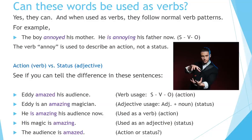Can these words be used as verbs? Yes, they can. When used as verbs, they follow normal verb patterns. For example: the boy annoyed his mother; he is annoying his father now. This follows the subject-verb-object pattern. The verb 'annoy' is used to describe an action, not a status. Action is described using a verb; status is described using an adjective.